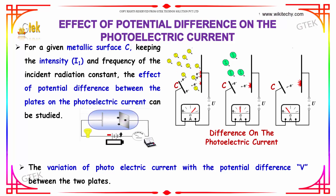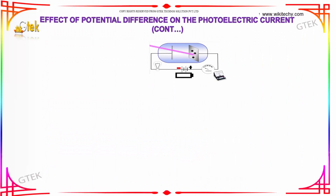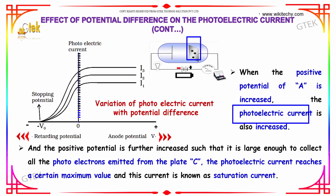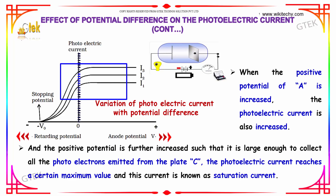The variation of photoelectric current with the potential difference V between the two plates is shown here. When the positive potential of A is increased, the photoelectric current also increases. As the positive potential is further increased and becomes large enough to collect all the photoelectrons emitted from plate C, the photoelectric current reaches a certain maximum value, referred to as saturation current.